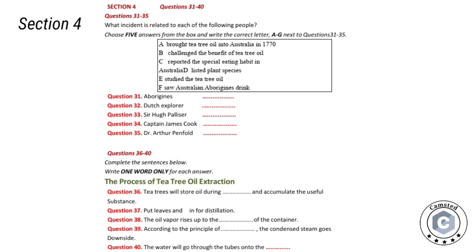The use of the name 'tea tree,' also called paper bark trees, probably originated from Captain James Cook's description, made soon after he had arrived at the coast of New South Wales in 1770. At the time he witnessed some Aborigines of Australia using one of the shrubs' leaves to make an infused drink in place of tea.